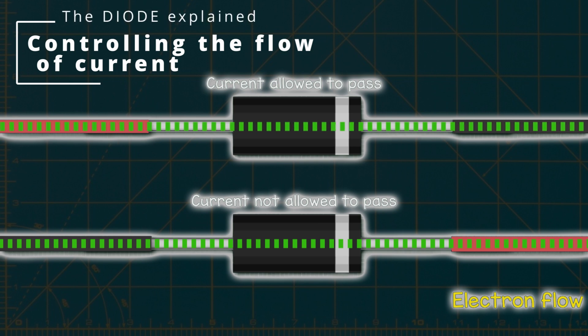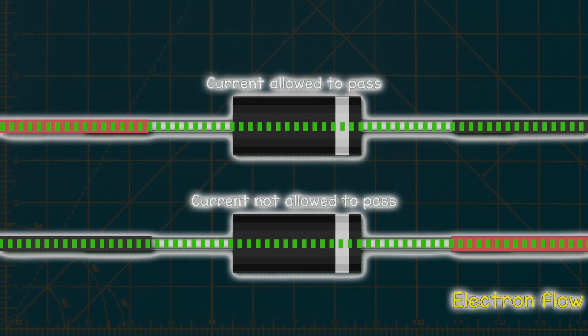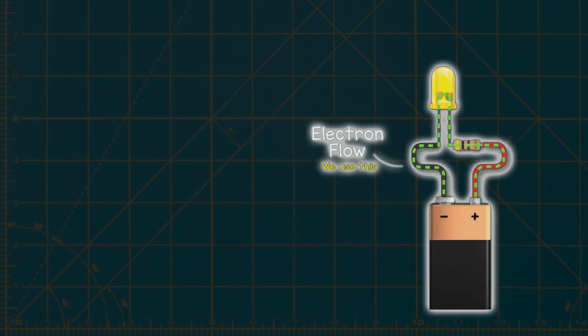A diode allows current to flow in only one direction within a circuit. In this video, we have animated the electron flow, where electrons move from the negative to the positive.